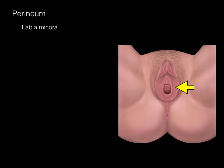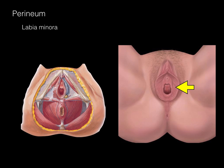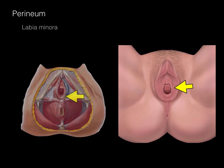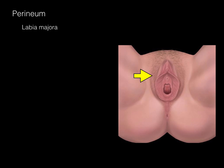The labia minora flanks either side of the urethra and vagina, with the clitoris at the top. Along the sides of the labia minora are the vestibular bulbs, which are erectile tissue that engorges with blood during intercourse. At the bottom is the vestibular gland, homologous to the bulbourethral gland, which secretes a lubricant to the vaginal opening during intercourse — nature's lubrication. The labia majora is the homolog of the scrotal sac: a flap of skin with adipose tissue typically covered with pubic hair.